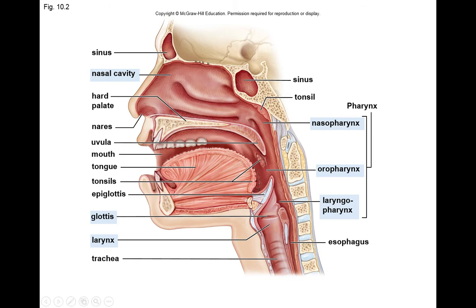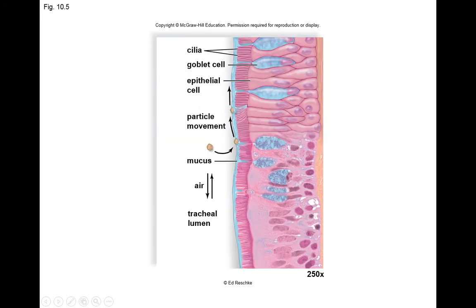Mucus is helpful in moving food through the digestive tract, but it's not helpful to have a lot of mucus and trapped particles in the airways, because if that settles into the lungs it can interfere with gas exchange. We have special cells interspersed among the pseudo-stratified ciliated columnar epithelial cells called goblet cells, whose job is to secrete mucus to the surface, creating that viscous, slippery surface of the respiratory tract.